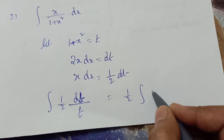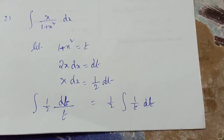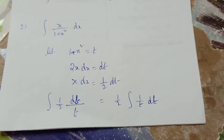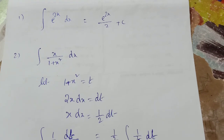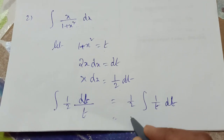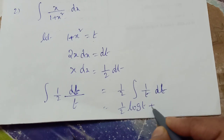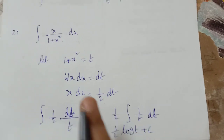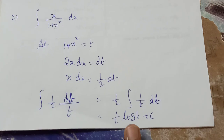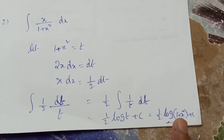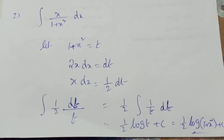Take the constant (1/2) outside: (1/2) times the integral of (1/t) dt. The integral of 1/t is log t, so the answer is (1/2)log t + C. Now substitute back: t = 1+x², so the final answer is (1/2)log(1+x²) + C.